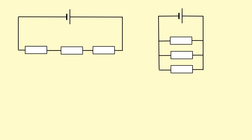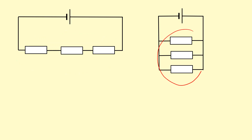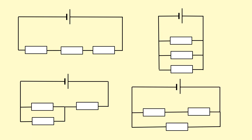So far we've been looking at circuits where all the components have been in series with each other or they've been in parallel with each other. Now we're going to look at circuits where we have a mixture of both, where some are parallel and some are series, just like these two.